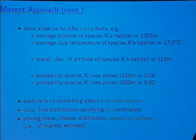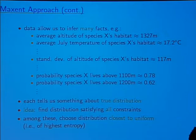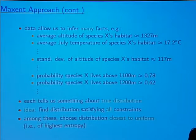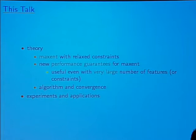The idea is to find a distribution which satisfies all of these constraints. As is commonly the case, there might be many distributions that satisfy all those constraints. So in the absence of any other information, the principle of maximum entropy says we should choose the one which is closest to uniform — the one which has highest entropy. That, at a high level, is the idea of maximum entropy.